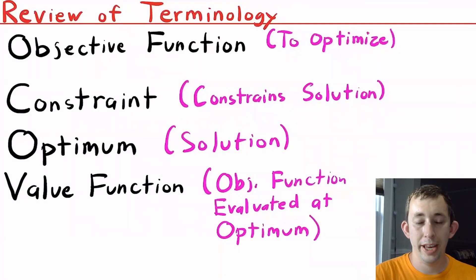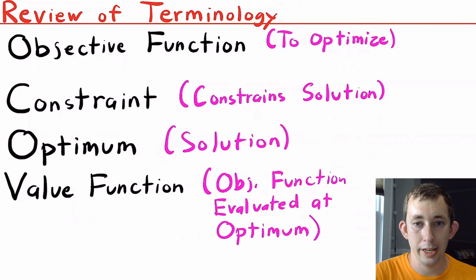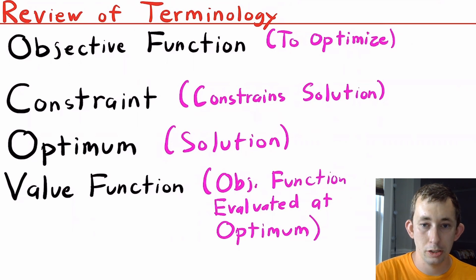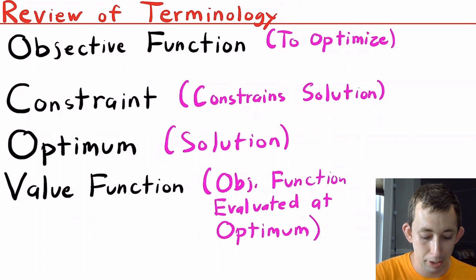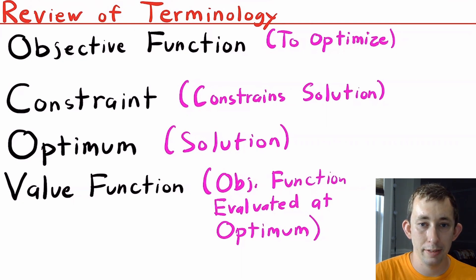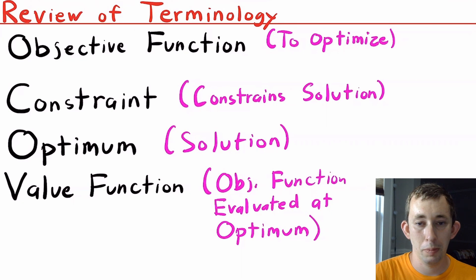Before we get into the table, I just want to talk quickly about vocabulary to make sure we're all clear on the terms I'm going to use. Remember that there are four main parts to any optimization problem. You have your objective function — that's the thing you're trying to maximize or minimize. You have a constraint, which prevents you from choosing an infinite number of goods because you don't have enough money. You have an optimum, which is your solution to the constrained optimization problem. And you have a value function, where you take your optimum and plug it into your objective function to get the value evaluated at the optimum.